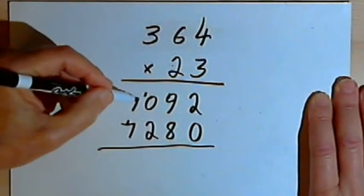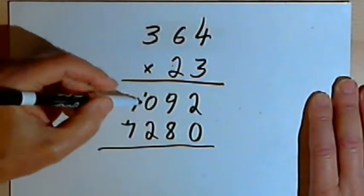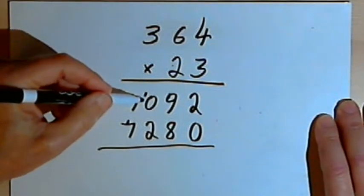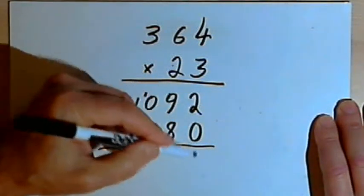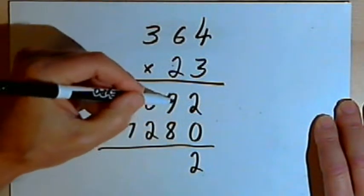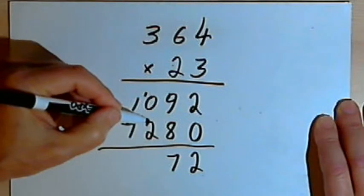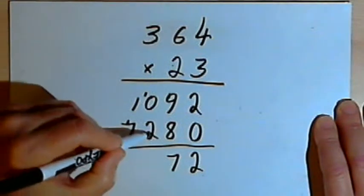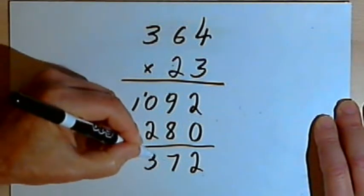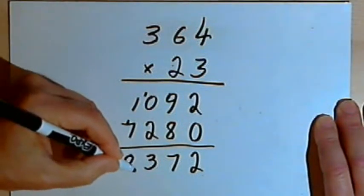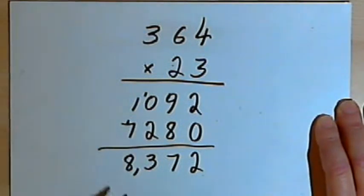Now I just have to add these two numbers together. These two numbers, by the way, are called partial products. So I'm going to add the partial products. 2 plus 0 is 2, 9 plus 8 is 17, I'll write the 7, I've got to carry a 1, 1 plus 2 is 3, and then I've got 1 plus 7 is 8. So the product is going to be 8,372.